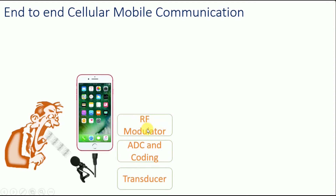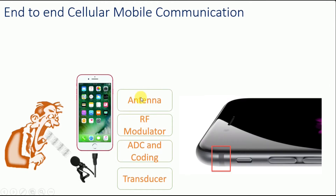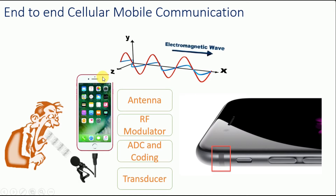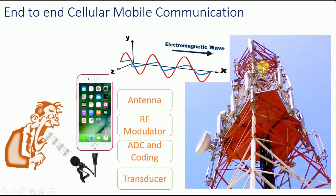This necessitates the use of RF modulators. These RF modulators are dependent on the technology, whether you are using 2G, 3G, or 4G. These RF modulators translate our signal in frequency to an appropriate band. Once it is translated, eventually we have an antenna that is transmitting an electromagnetic wave out of our cell phone towards the base transceiver station. This over-the-air interface is termed as the UM interface in GSM networks.